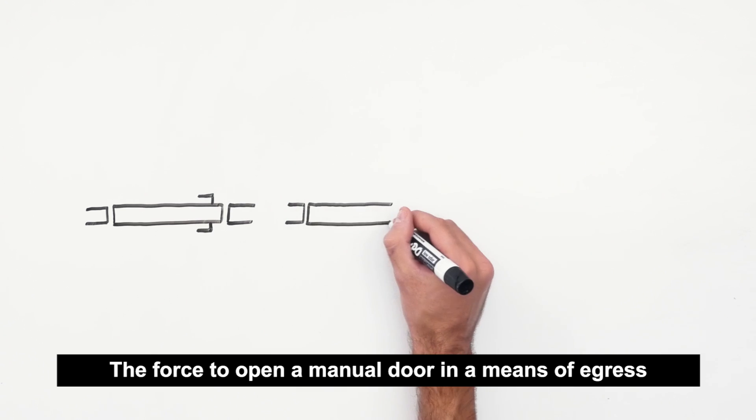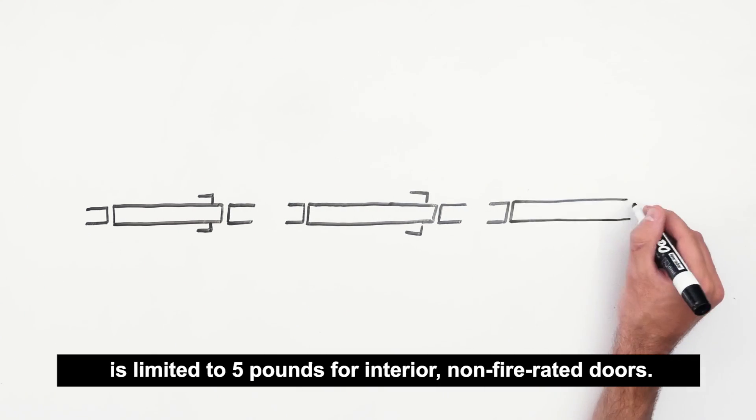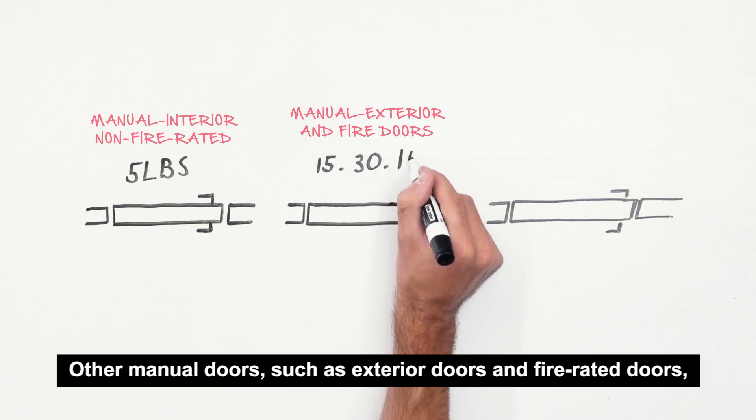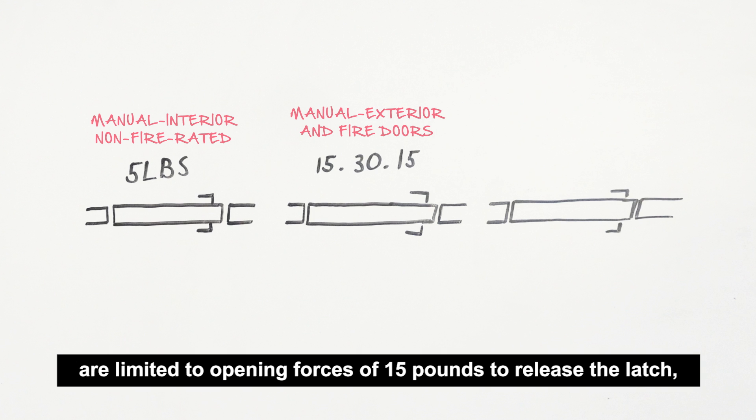The force to open a manual door in a means of egress is limited to 5 pounds for interior, non-fire rated doors. Other manual doors, such as exterior doors and fire rated doors, are limited to opening forces of 15 pounds to release the latch, 30 pounds to set the door in motion, and 15 pounds to swing the door to a fully open position.